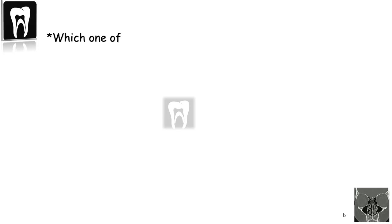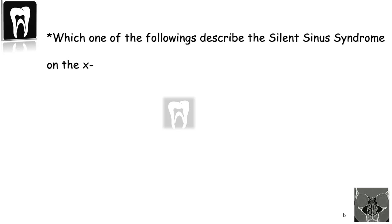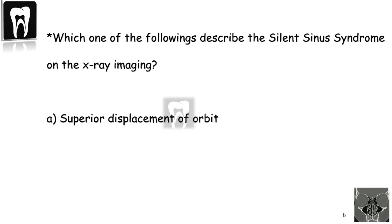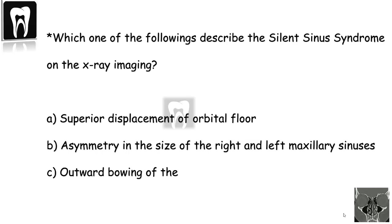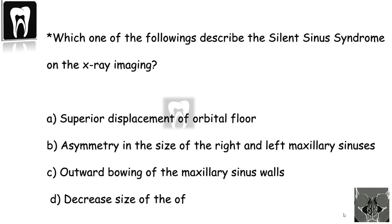Which one of the following describes the silent sinus syndrome on x-ray imaging? A: Superior displacement of the orbital floor. B: Asymmetry in the size of the right and left maxillary sinuses. C: Outward bowing of the maxillary sinus wall. D: Decrease in the size of the orbit.